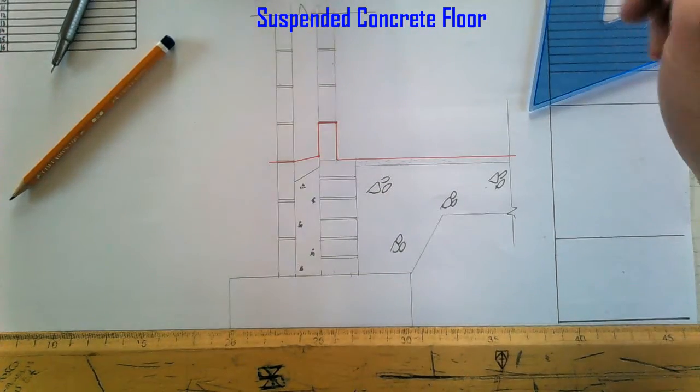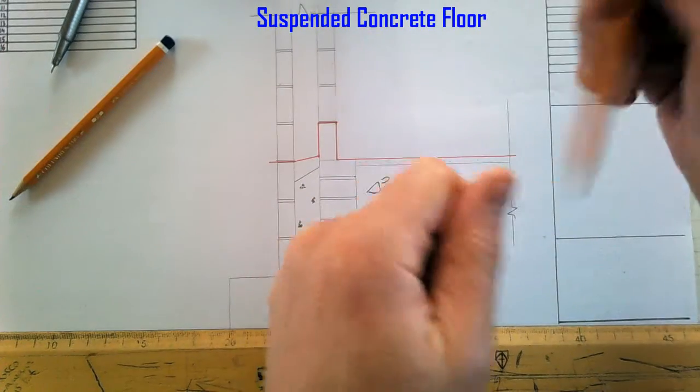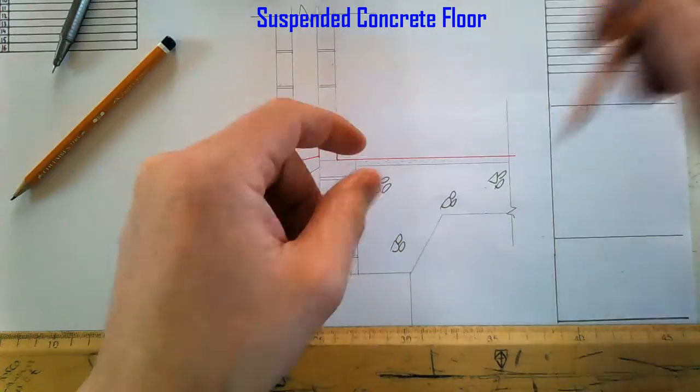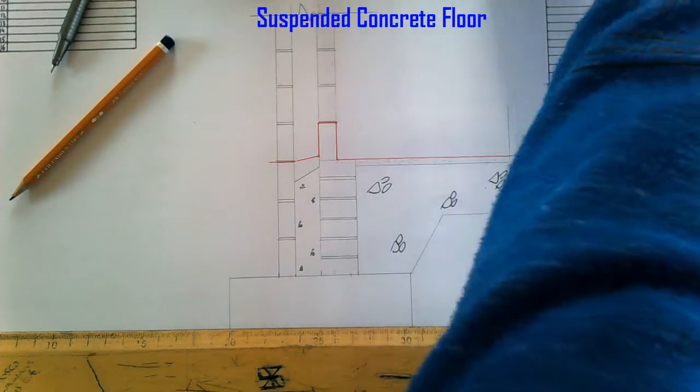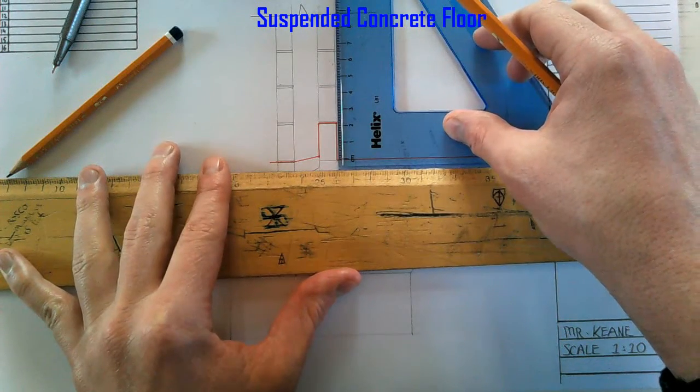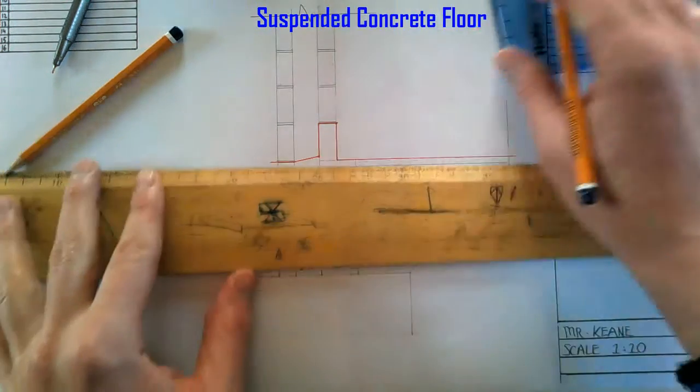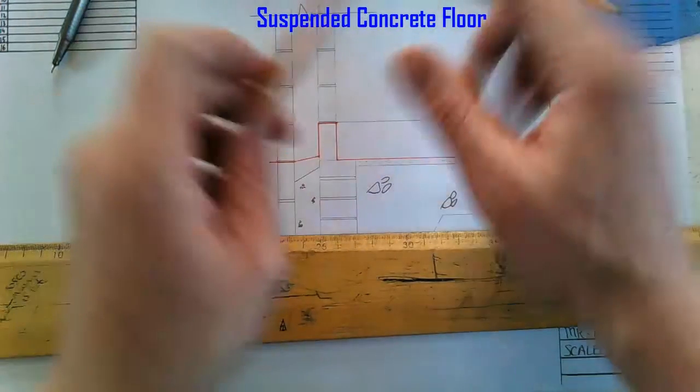So then we're going to put in our concrete slab, which is depending on the span of the floor, it depends on the thickness of the concrete you put in. But for this one I'm just going to put in 225 just to fill in this block here.